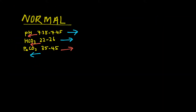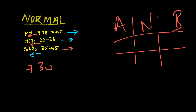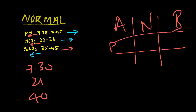Let's try another example. Drawing our tic-tac-toe — acid, normal, and basic. You have three results: pH 7.30, HCO3 is 21, and PaCO2 is 40. 7.30 falls in the acid range of pH, so we put it under acid. Next, for HCO3 of 21, that falls under the acid category as well. We fill that in — acid, HCO3.